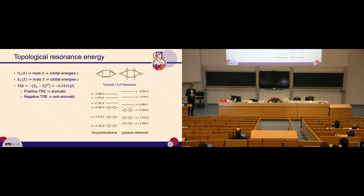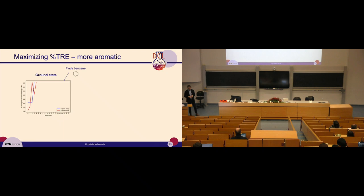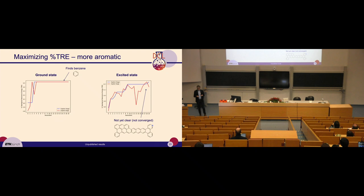Once we have TRE, we use it for inverse design via a genetic algorithm that optimizes the percentage TRE — a normalized version — as the fitness function. We have genetic operations such as adding rings, removing rings, and replacing atoms to cover a large chemical space. When we maximize aromaticity in the ground state, the genetic algorithm quickly finds benzene as the most aromatic molecule, which makes sense. In the excited state, it finds another molecule — results that are quite interesting and maybe surprising.